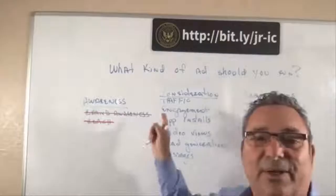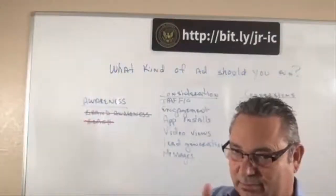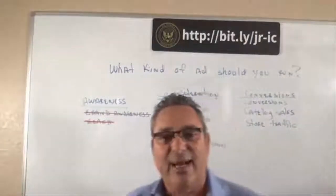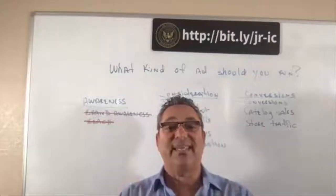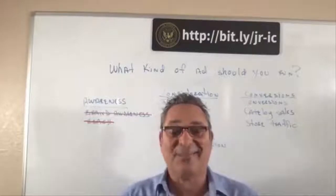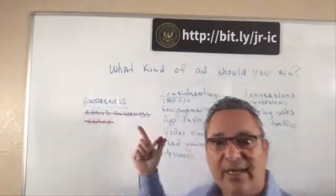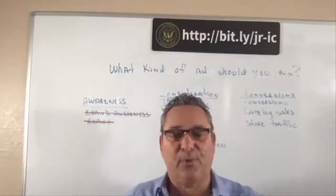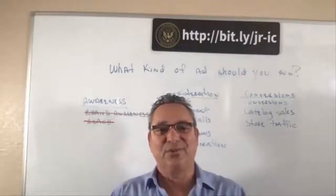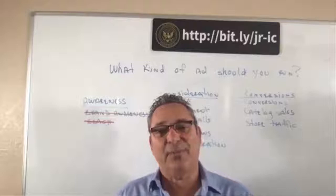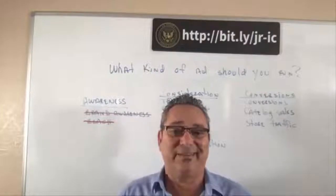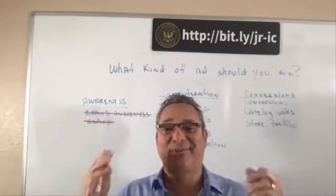Then we come to the middle column — Consideration. The first option is Traffic. Facebook is going to send you a whole bunch of traffic. You might think, 'If I get a lot of traffic, a bunch of people will buy from me.' No, that's not how it works. What happens is Facebook sends you people who just like to click on stuff and go places. They're not known for buying or opting in — just traffic.